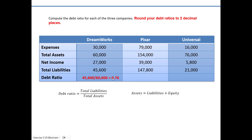For DreamWorks, that's 76%. If we were just curious what portion of the assets are financed by owners or equity, we'd take 100% minus the debt ratio of 76%, which would be 24%. That's not needed for this problem, but it's worth understanding.